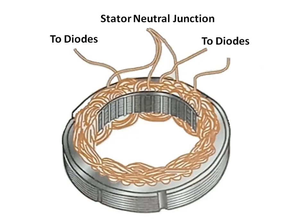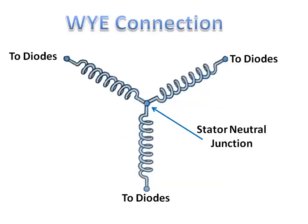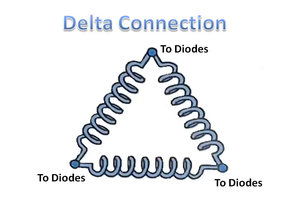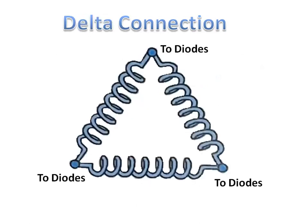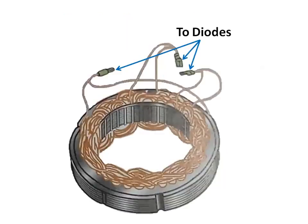Some stators have Y-connected windings, and in other stators the windings are delta connected. Y-connected stator windings have three ends of the windings connected together in a Y-shaped connection, and the other ends of the windings are connected to the diodes. In a delta-connected stator, the end of one stator winding is connected to the next stator winding. In this type of stator winding, the junction where each pair of stator windings is connected is attached to the diodes.